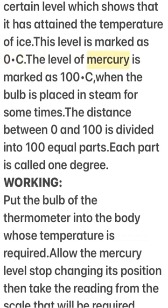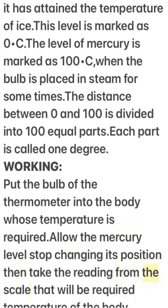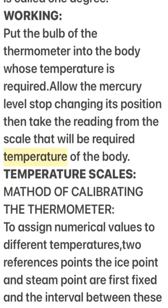This level is marked as 0°C. When the bulb is placed in steam, the level of mercury is marked as 100°C. The distance between 0 and 100 is divided into 100 equal parts; each part is called 1 degree. Working: Put the bulb of the thermometer into the body whose temperature is required, allow the mercury level to stop changing its position, then take the reading from the scale — that will be the required temperature of the body.